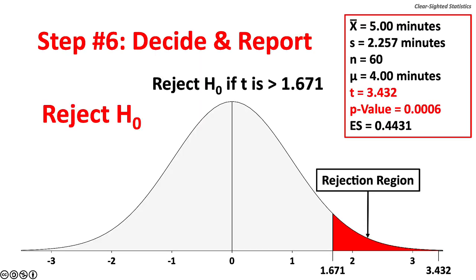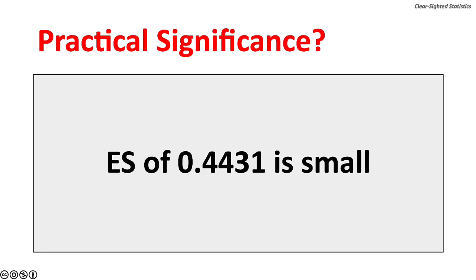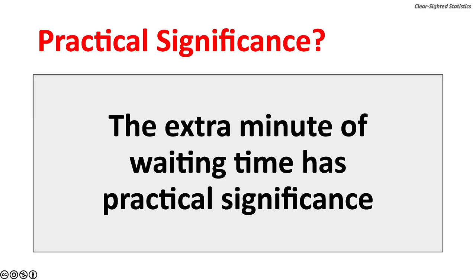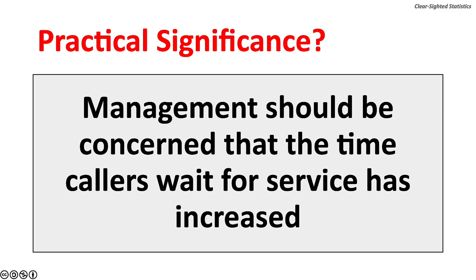Step 6: Decide and Report. With a test statistic as large as 3.432 and a p-value less than 0.001, there is sufficient evidence to reject the null hypothesis. The difference between 5 minutes and 4 minutes is statistically significant — waiting times have increased. The effect size of 0.4431 is a small effect, and the fact that it is not negligible indicates the test is not overpowered. The extra minute of waiting time has practical significance. Management should be concerned that the time callers wait for service has increased.